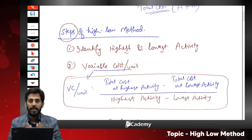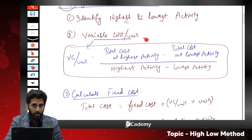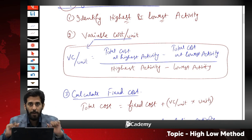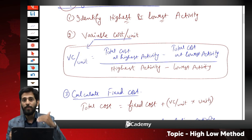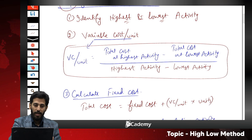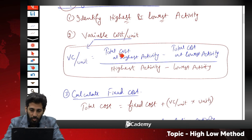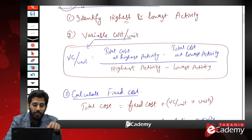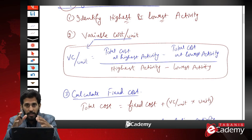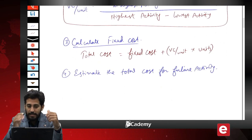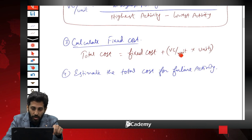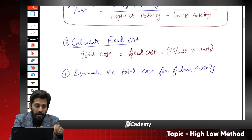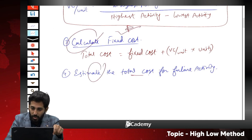Step two: calculate the variable cost per unit using the formula: variable cost per unit = (total cost at highest activity − total cost at lowest activity) ÷ (highest activity − lowest activity). The resulting figure is variable cost per unit. Step three: apply the total cost formula — total cost = fixed cost + (variable cost per unit × units) — to calculate fixed cost, then estimate cost for future activity.